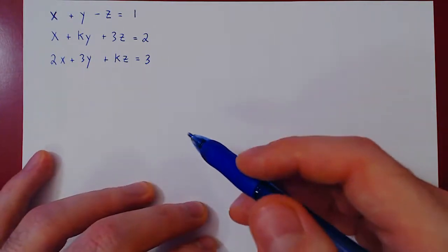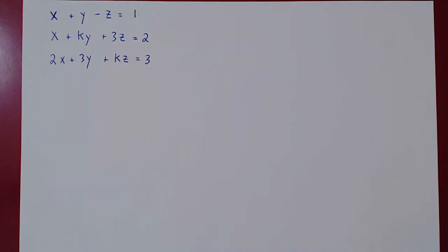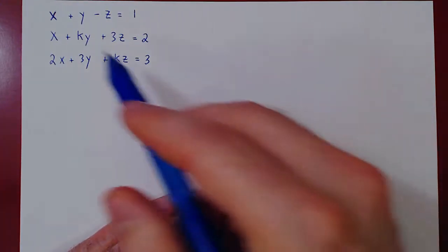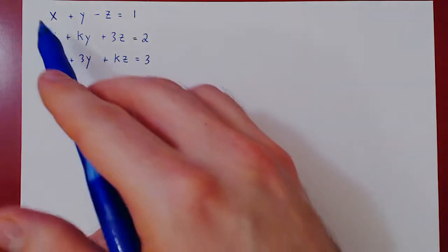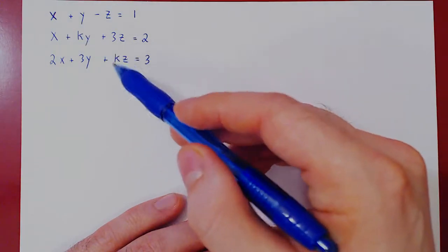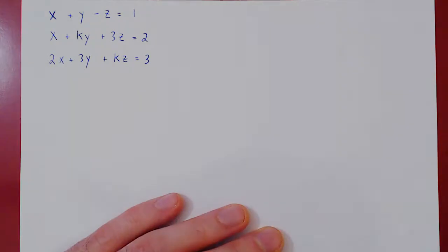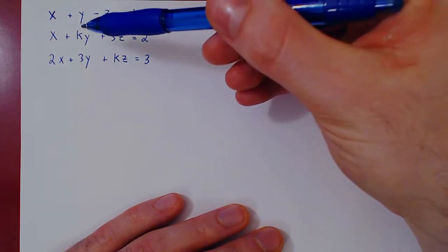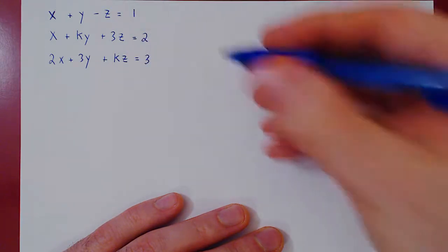Ok, so in this video, we will consider the following family of linear systems. Now what do I say family? Well, let's look at the system closely. We have three equations and the three variables x, y, and z, but there is this k floating around in our linear system. Now here, k plays the role of a parameter. As we take on different values of k, we will be getting different linear systems.